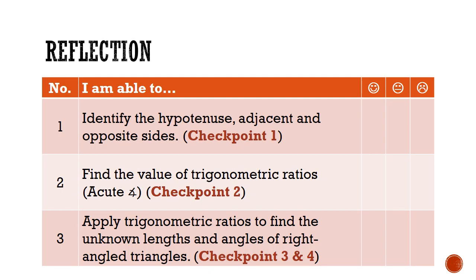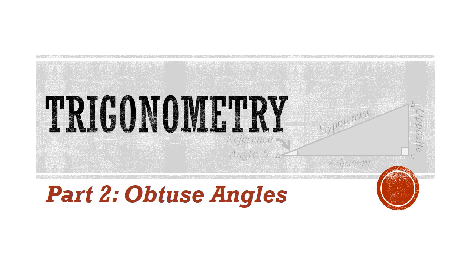Finally, let's go back to the success criterias that we set up at the start of the lesson. Are you now able to identify the hypotenuse, adjacent, and opposite sides for a triangle? Can you find the value of trigonometric ratios using the mnemonic? Can you apply the trig ratios to find unknown lengths and angles of right-angled triangles? We have come to the end of part 1. If you have any clarifications that you need, please leave a note in the comment section below. Stay tuned for part 2 where we will be zooming in into the trigonometric ratios for obtuse angles. Thank you and have a good day of learning.